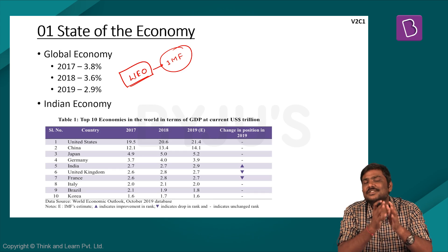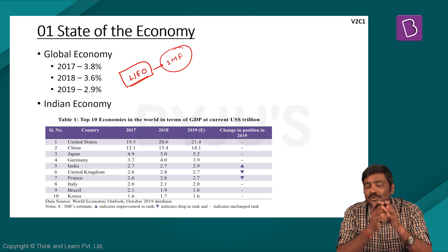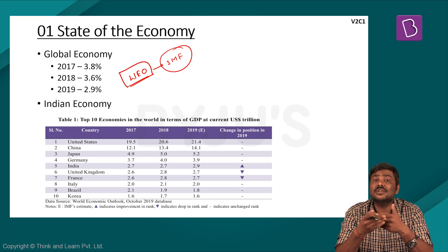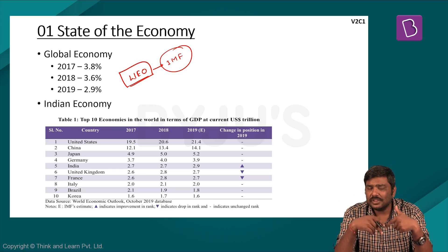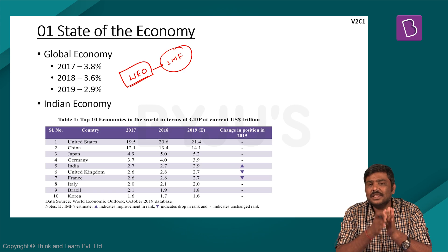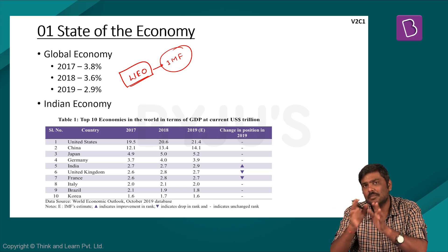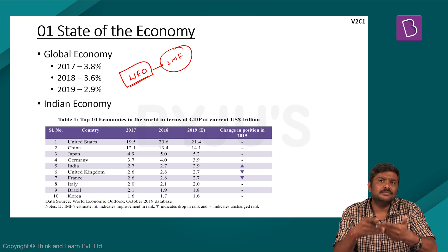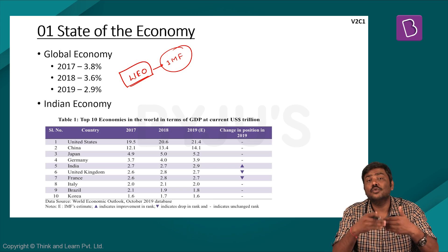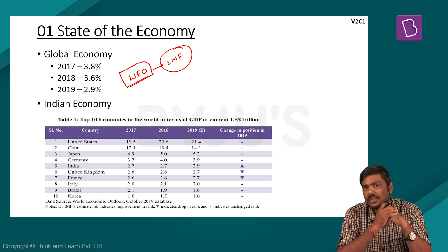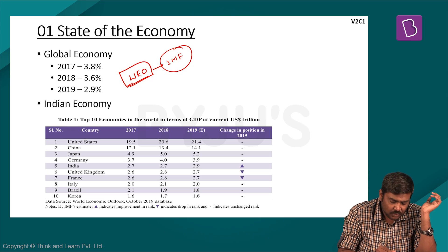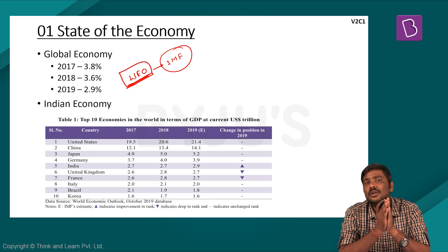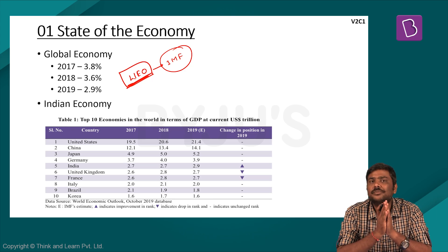In Volume 1, there was a chapter that discussed the concept of ease of doing business, and one report mentioned was the Ease of Doing Business Report, published annually by the World Bank — another very important report from the perspective of UPSC Prelims. So let's begin the discussion of points mentioned in the Economic Survey with respect to the World Economic Outlook report.